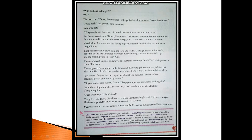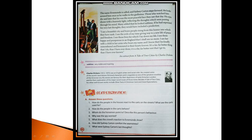He says, 'They will be quick, don't fear — it's their daily routine job so they won't let you wait, they'll just do it quickly.' The girl is called first. They bless each other; her face is bright with faith and courage. She is soon gone — the knitting women count 22. Many voices murmur, many faces look upwards, the crowd moves forward like a great wave. The name Evremont is called, and Sydney Carton steps forward, ready to be beheaded. He looks around him once as he walks to the guillotine.